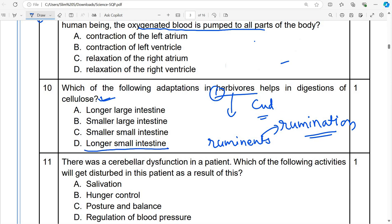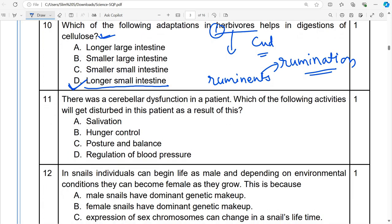So long small intestine is the correct answer. 11th question: There was a cerebellar dysfunction in a patient. Which of the following activities will get disturbed in this patient as a result of this? Salivation, hunger control, posture and balance, and regulation of blood pressure. There was a cerebellar dysfunction in a patient, meaning there was malfunctioning or dysfunction in the cerebellum of the patient. So which activity will be interrupted or disturbed? So posture and balance, correct answer is posture and balance.